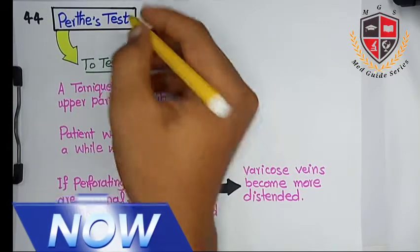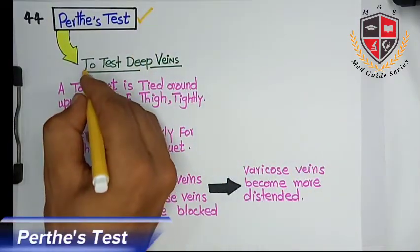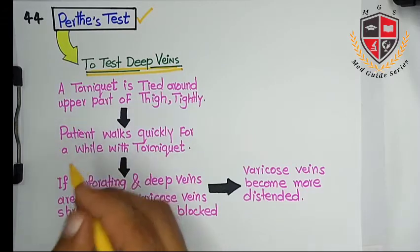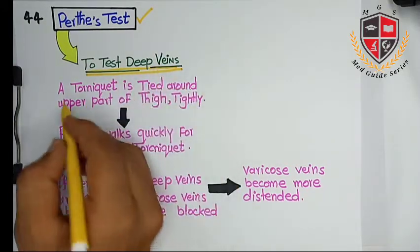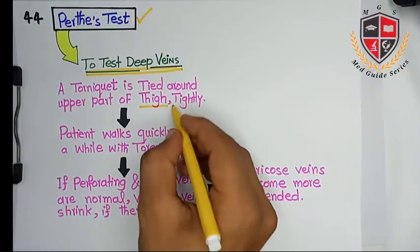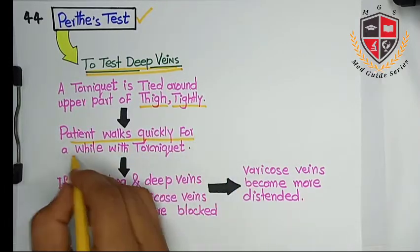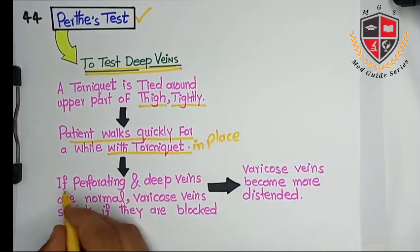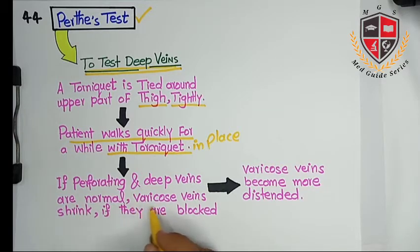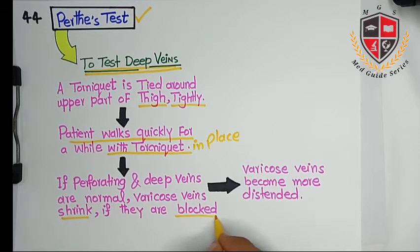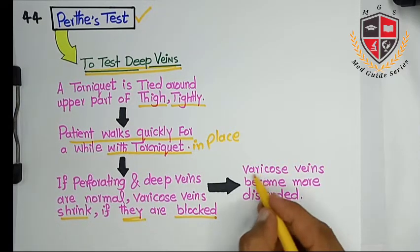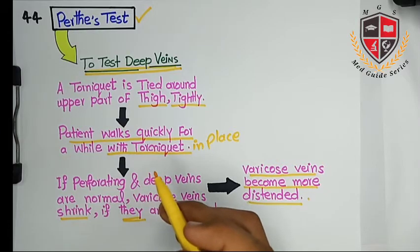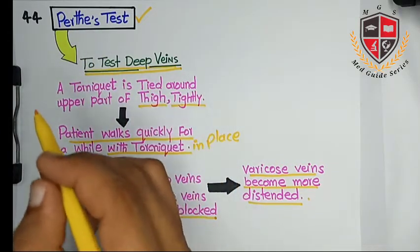The next clinical topic is Perthes' test. This is a test to check for varicosities in deep veins. A tourniquet is tied tightly around the upper part of the thigh, and the patient walks quickly for a while with the tourniquet in place. If the perforating and deep veins are normal, varicose veins shrink. If the perforating and deep veins are blocked, varicose veins become more distended.